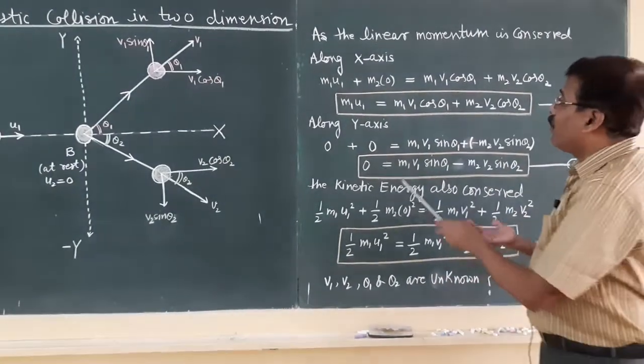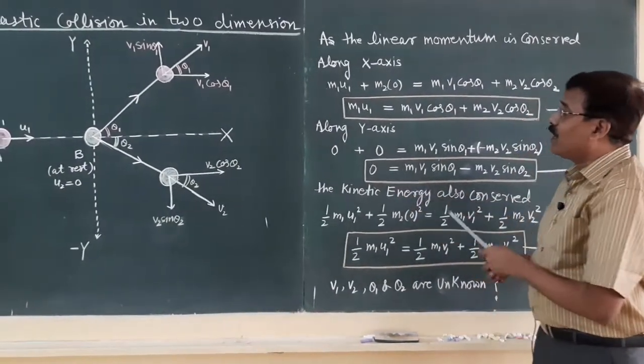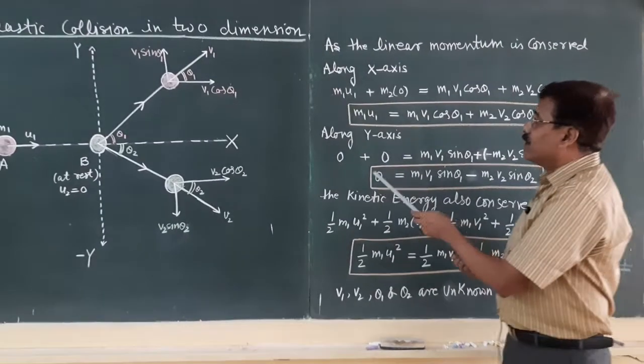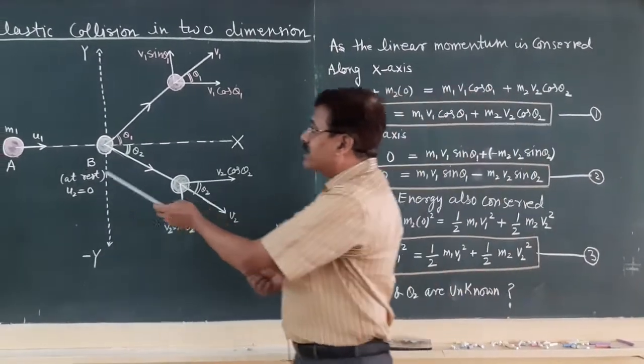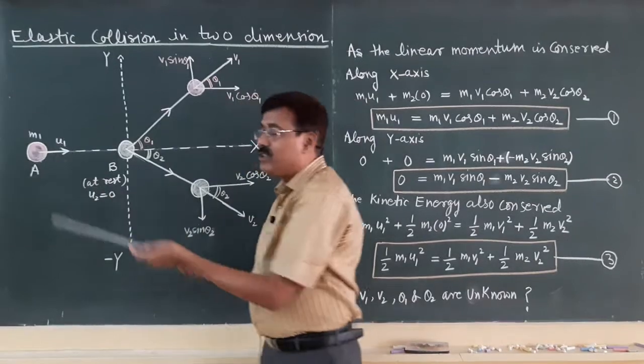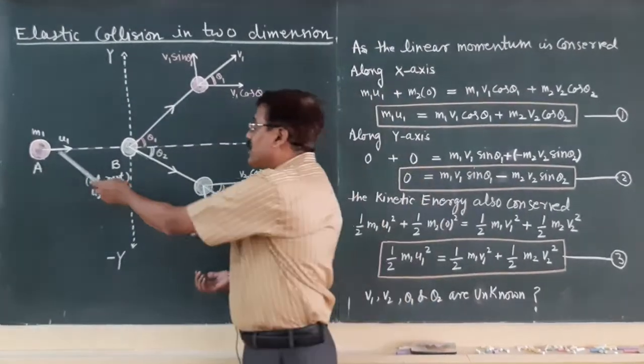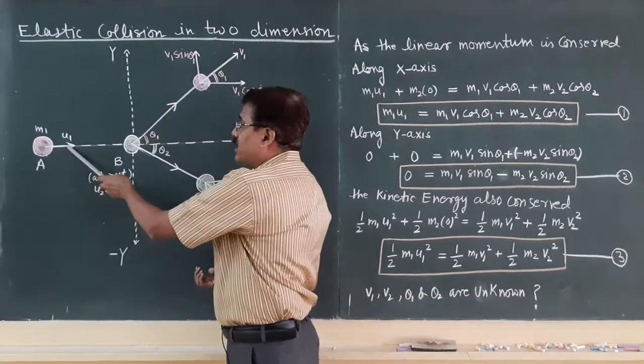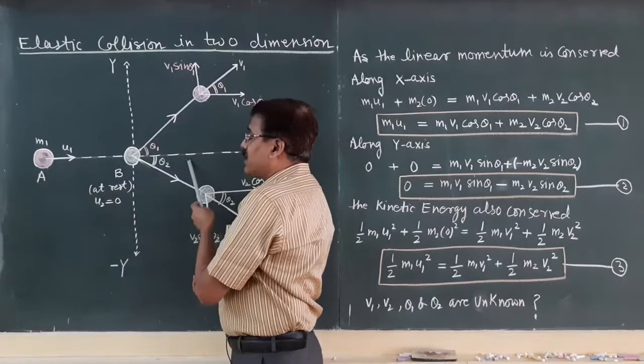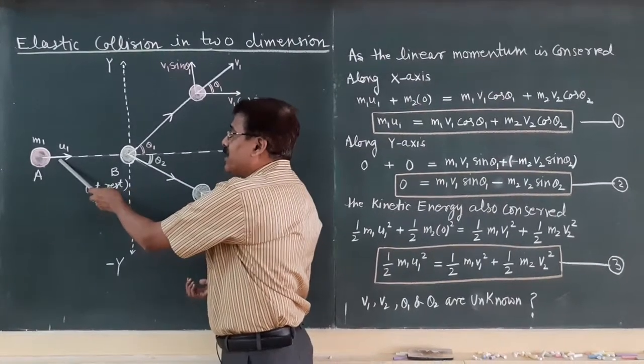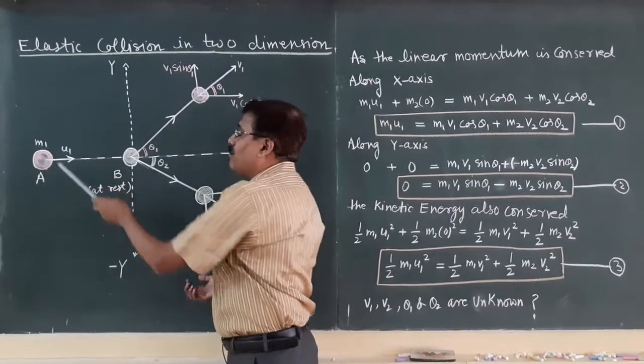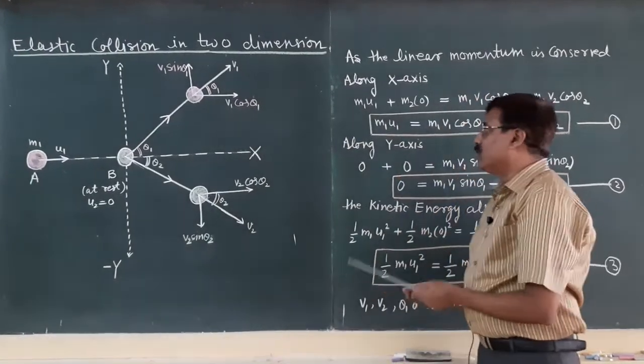Similarly, for momentum conservation along y axis the momentum along y axis of object A will be 0. Reason because the object moving with velocity u1 parallel to x axis, its inclination is 0, so its vertical component of velocity will be 0.